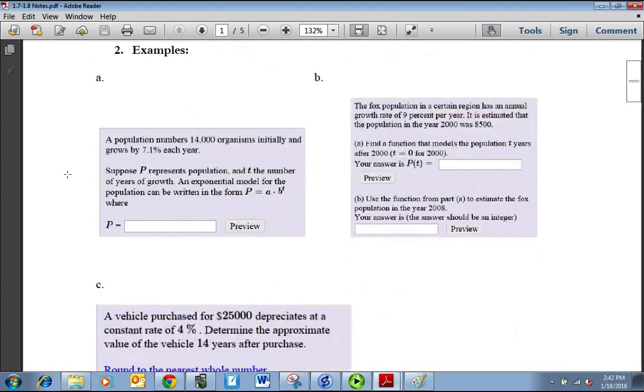For example, if we have a population of 14,000 organisms initially, and it grows 7.1% each year, we want to write out what P is as a function, where it represents population and t is the number of years of growth. We're going to use the exponential model P = ab^t. The a is your initial starting value, so 14,000, and then write 7.1% as 0.071. Remember your b would be 1 plus that, so it's going to be 14,000 times 1.071 to the t power.